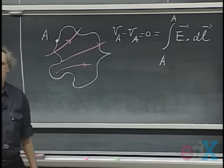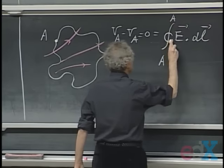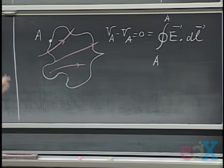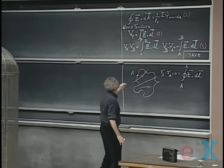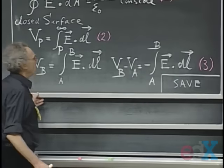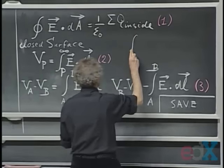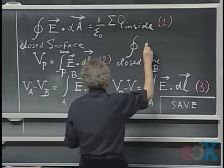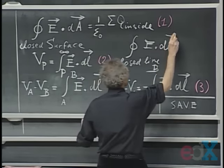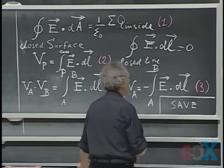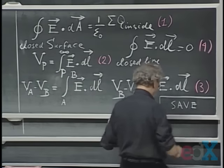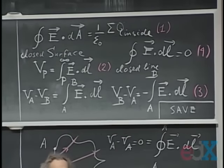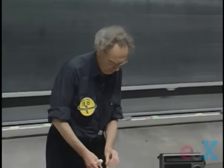We normally indicate such an integral with a circle, meaning you end up where you started. This is a closed line — not a closed surface as in equation one. So whenever we deal with static electric fields, we can add another equation: the closed line integral of E dot dL equals zero. Later in the course we will see special situations with non-static fields where that is not the case, but for now, it is.